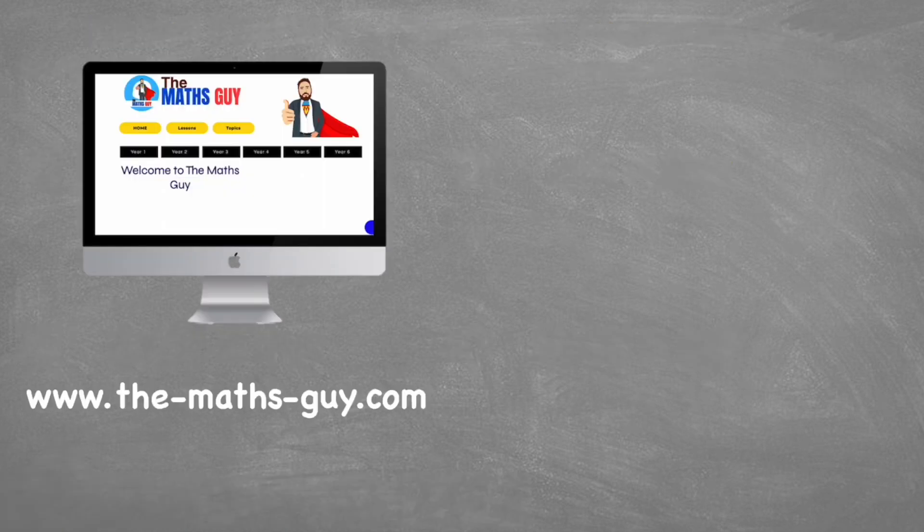And there you have it. That is finding the missing value in a pair of equivalent ratios. Hopefully this video has been helpful for you. Thank you very much for watching. But for now, peace out.